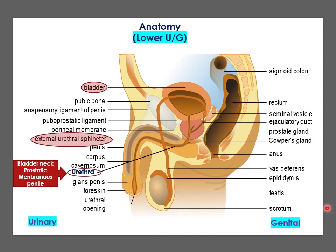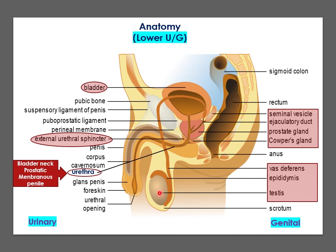On the right are the structures involved in the genital system. The first group includes the seminal vesicles, ejaculatory ducts, prostate gland, and Cowper's gland. The second group of structures includes the testis, epididymis, and the vas deferens, which carry sperm from the testis to be secreted into the prostatic urethra.